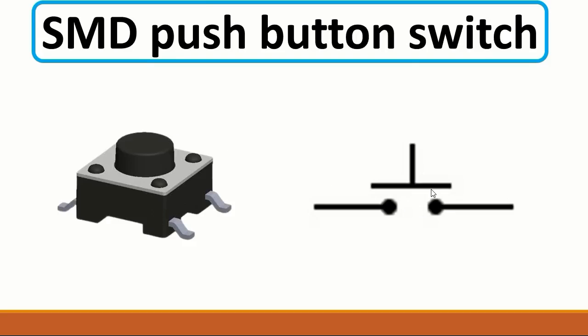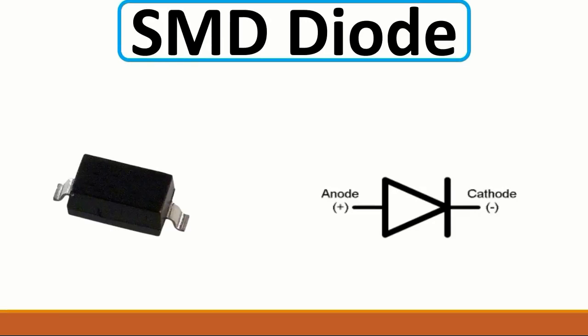Here we have the ACMT push button switch. This is basically a normal switch, and as you can see the symbol — we find the switch in the on/off button. Then we have the normal SMD diode.